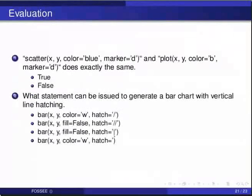Here are a few self-assessment questions. Question one: scatter(x, y, color='blue', marker='d') and plot(x, y, color='b', marker='d') — do they produce exactly the same result? True or false? Question two: What statement can be issued to generate a bar chart with vertical line hatching? Option one: bar(x, y, color='w', hatch='/') or option two: bar(x, y, fill=False, hatch='//').